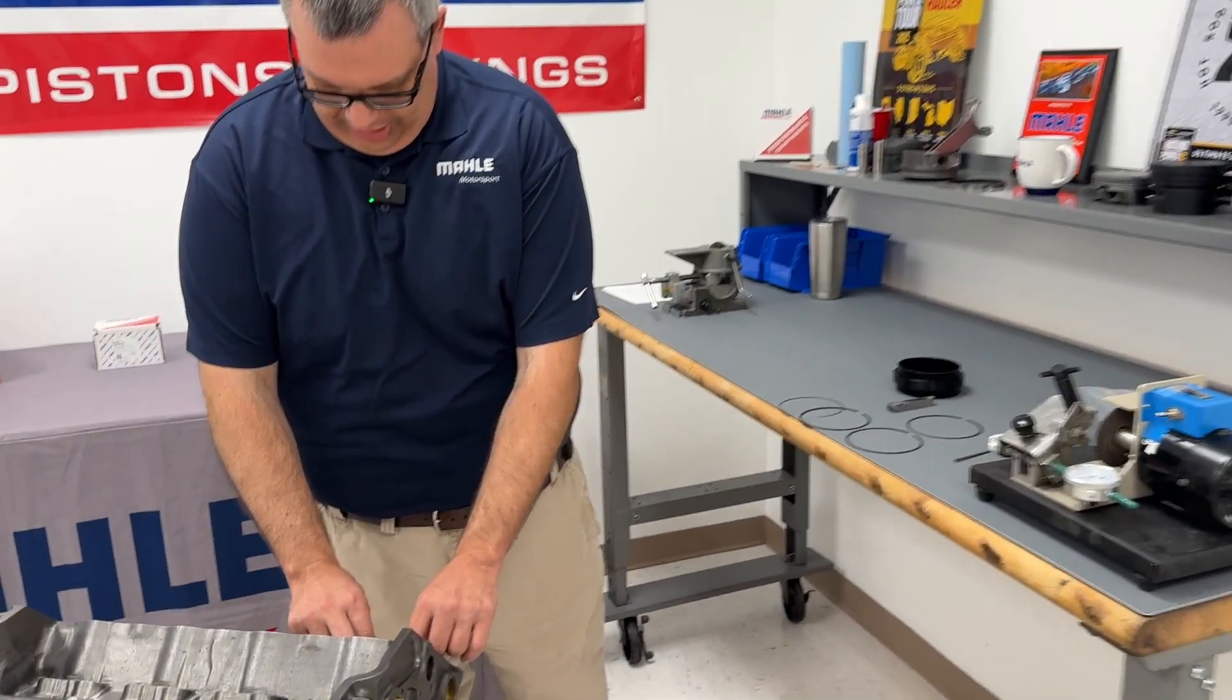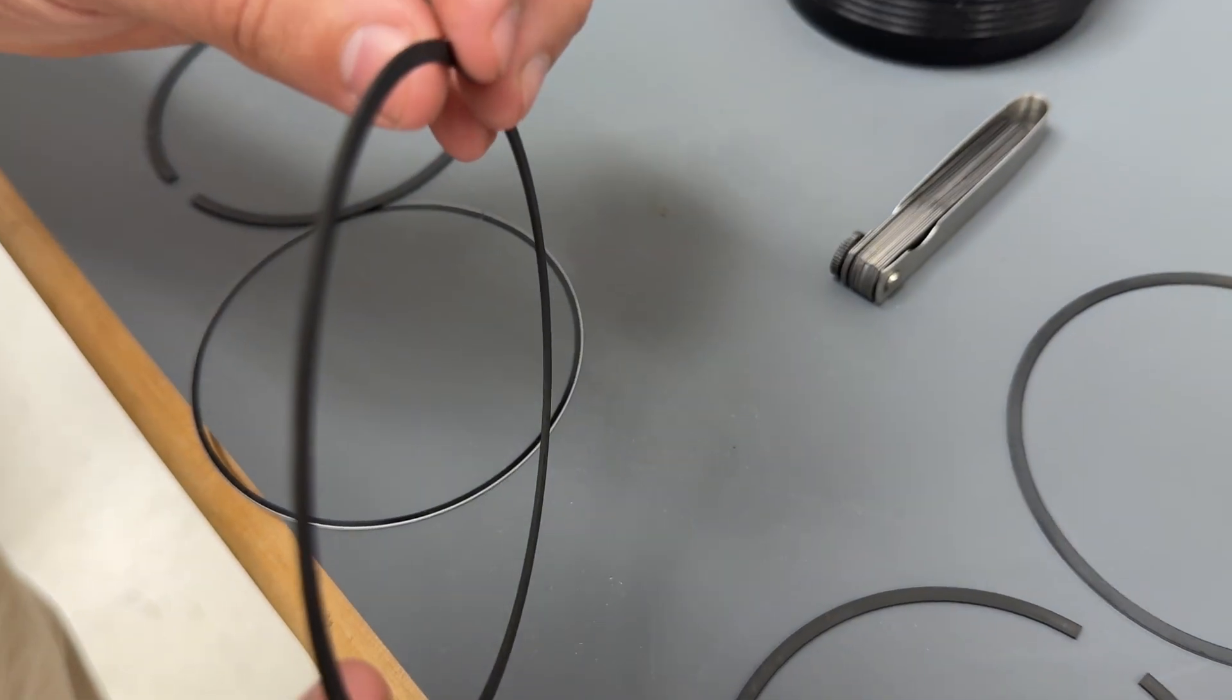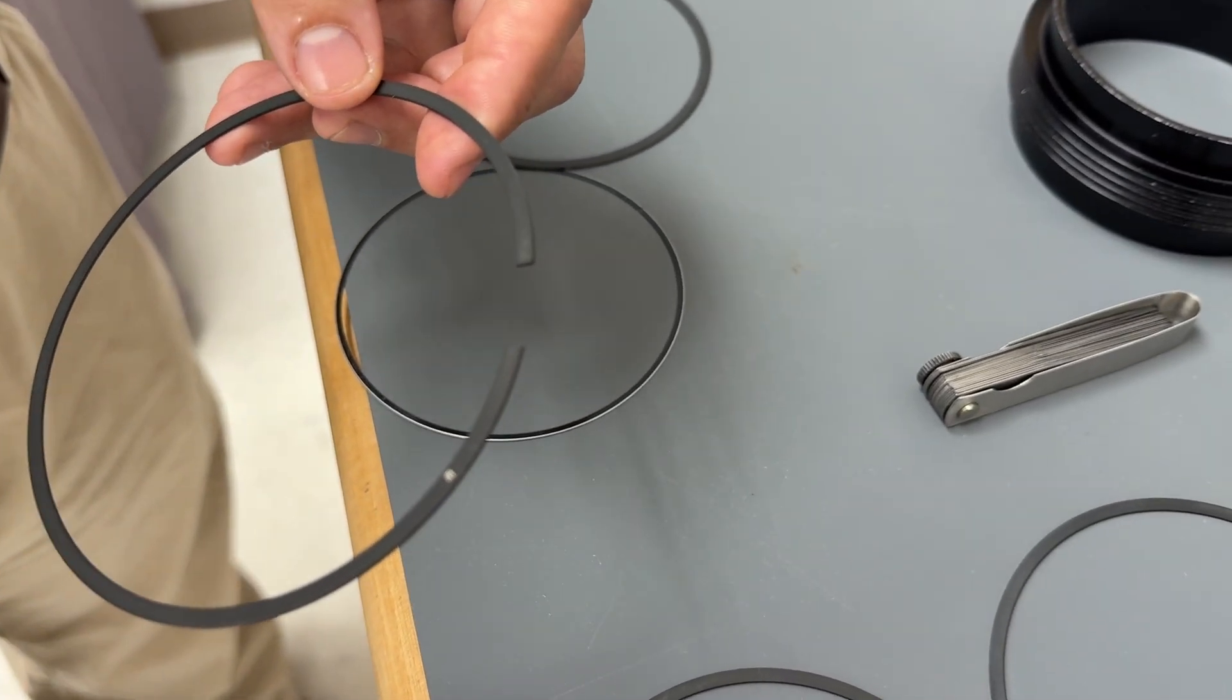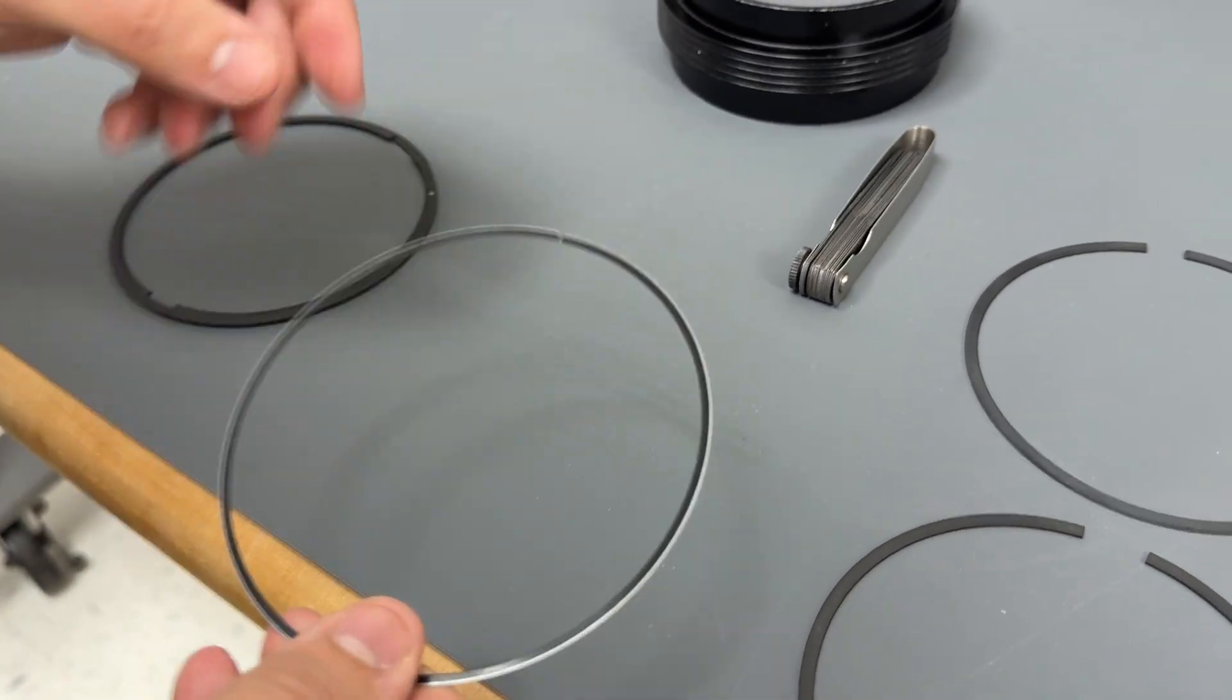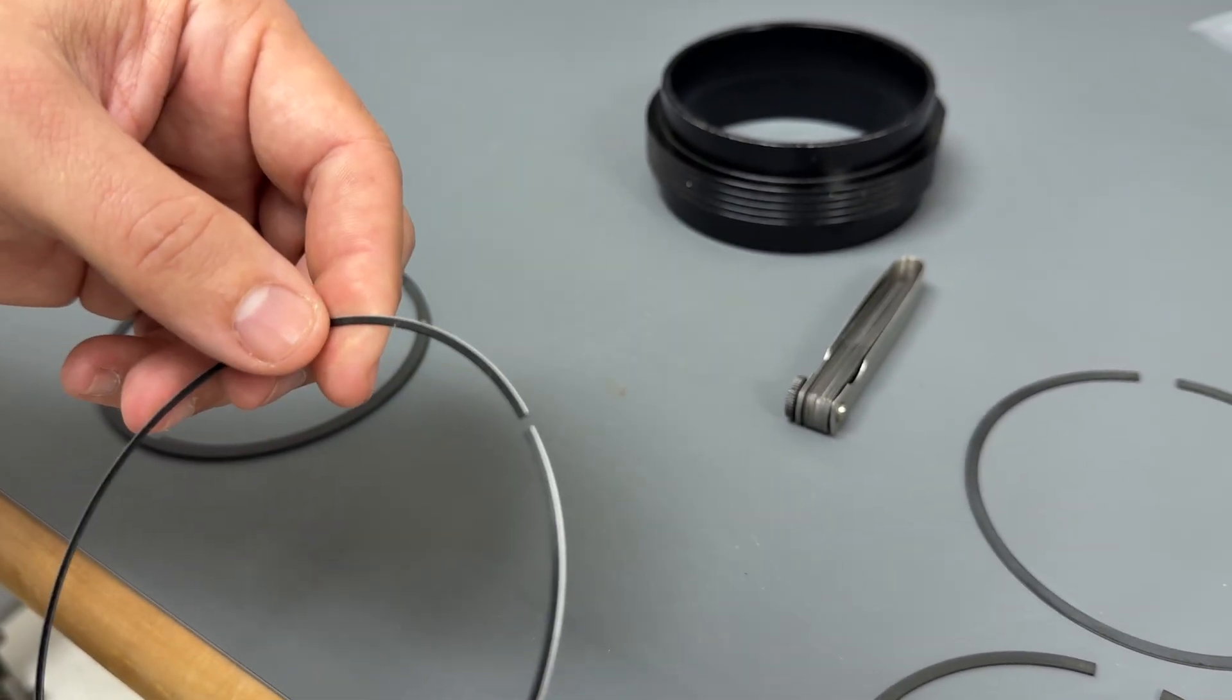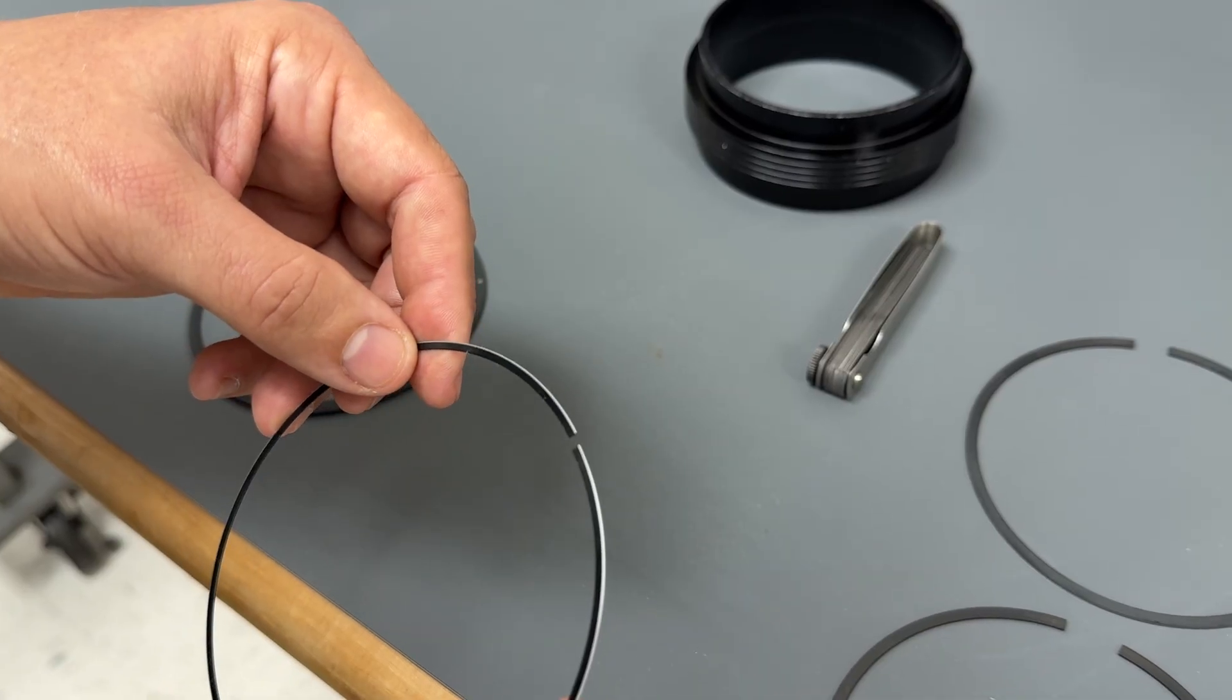So now that we filed our top ring, we have that set. We need to do the same to our second ring. And it's the same procedure. We'll put it in the block, square it up, check and see where our gap is. We will refer back to our chart to see where we need to be and then we'll file some off. And then we do have the oil rails. We give a minimum recommended gap for that. So we can put those in the bore and check them the same way. You shouldn't have to file anything off of these rails, but you should have at least a 15 thousandths gap. If it's larger than that, that's fine. But we don't want anything smaller than 15 thousandths.